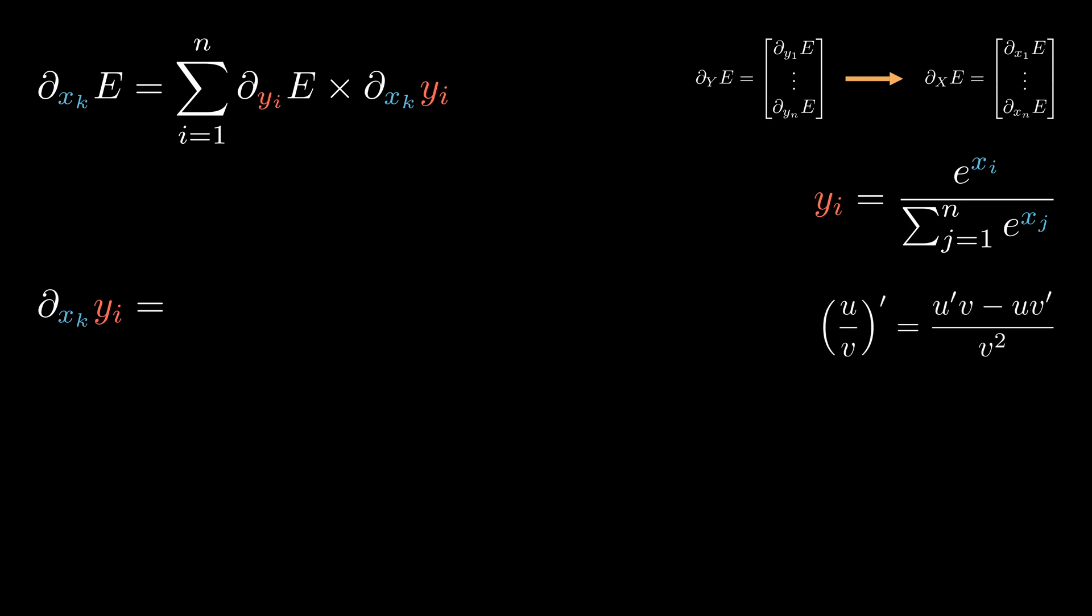As an example, let's calculate the derivative for a specific element of the input vector, say x sub k. Adding the contribution of each output variable and using the chain rule, we get to this. The unknown is the derivative of the output with respect to the input. For that, we need to remember the actual formula of the softmax activation. Notice how the result will be different depending on whether k is equal to i or not.